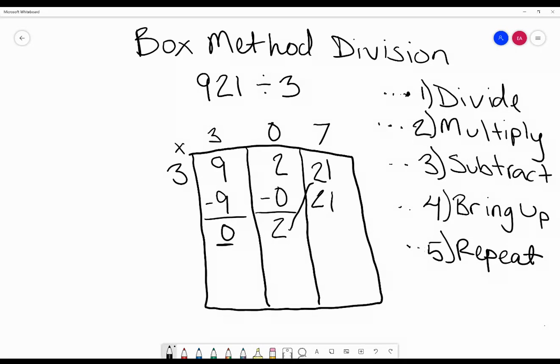We subtract 21 minus 21 which gives us 0. Again, there is nothing to bring up and we have no more numbers to divide, so we do not have to repeat any more.